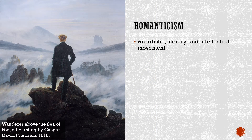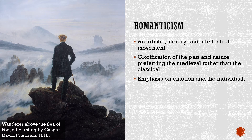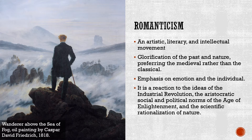Romanticism is, first of all, an artistic and literary and intellectual movement. It's often associated with paintings like the one you see here by Caspar David Friedrich — The Wanderer Above the Sea of the Fog. It generally has a glorification of the past and nature, and it tends to prefer the medieval rather than the classical period. It harkens back to a time prior to the French Revolution — a time when there were nobles, a time when tradition and one's place in society mattered. There tends to be in Romanticism an emphasis on emotion and on the individual. Ultimately, Romanticism is a reaction to the ideas of both the Industrial Revolution and the aristocratic social and political norms of the Age of Enlightenment.